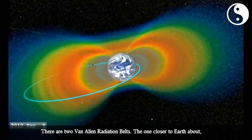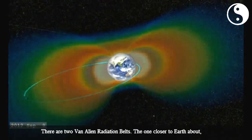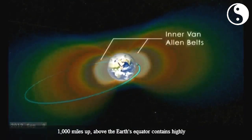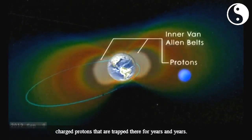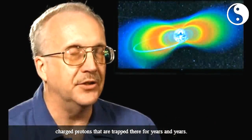There are two Van Allen radiation belts. The one closer to Earth, about a thousand miles up above the Earth's equator, contains highly charged protons that are trapped there for years and years.